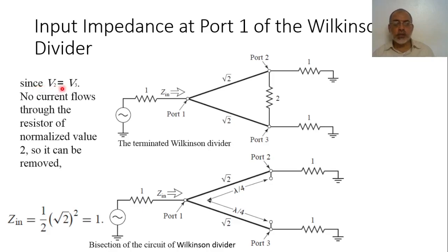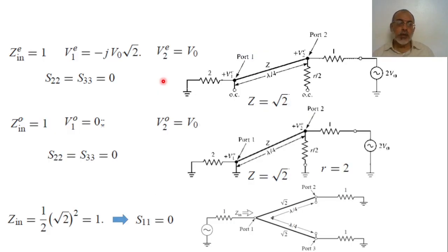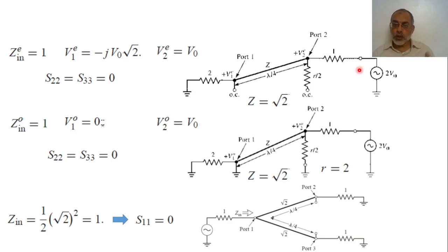Since V2 and V3 have no current flowing through the resistor, it can be removed. From this analysis we conclude that this design of the Wilkinson power divider has S11 equals zero. From the even and odd mode analyses, the input impedance at port two in even mode equals one, meaning the reflection coefficient at port two is zero. Because port two is symmetric to port three, S22 and S33 for the even mode are both zero.